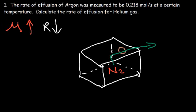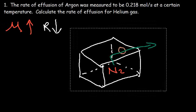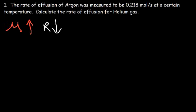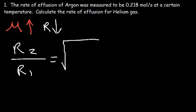Effusion is similar to diffusion. Diffusion is the movement of material from a region of high concentration to a region of low concentration. But the difference is that effusion is specifically related to a gas escaping through a hole from a container. The equation for Graham's Law of Effusion is R2 over R1 equals the square root of M1 over M2, because the rate and molar mass are inversely related.